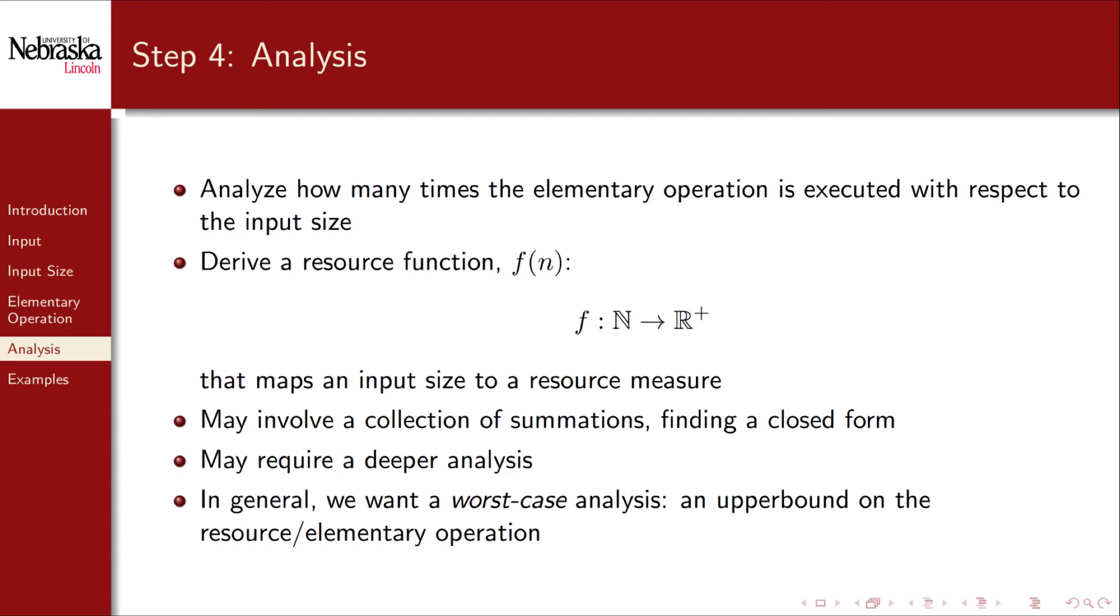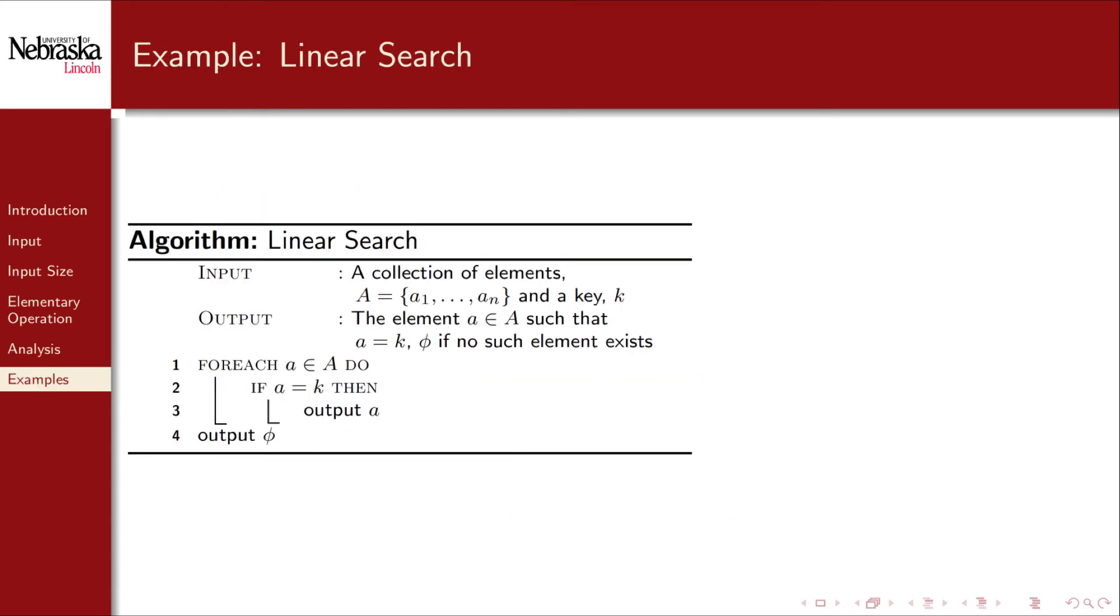To reiterate, we'll hold off on step 5 for the next video. For now, let's look at a few examples of a full analysis. Here's the linear search algorithm again. Step 1, we identify the input which is a collection, ignoring the single key. Step 2, the size is the cardinality of the collection, also identified in the pseudocode's input. The most appropriate elementary operation in the algorithm is the comparison on line 2.